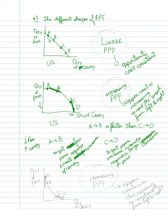The third option would be quantity of candy, quantity of pens, and it's actually bowed inward. This is called the decreasing PPF, and here the opportunity costs are decreasing.